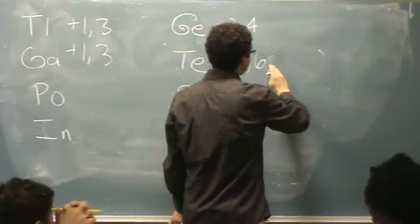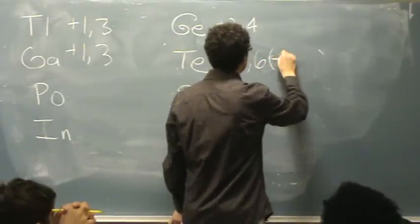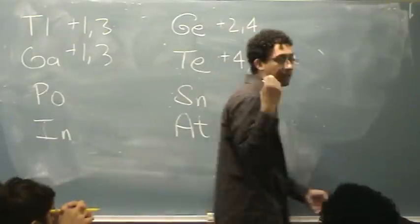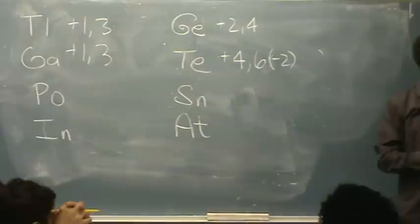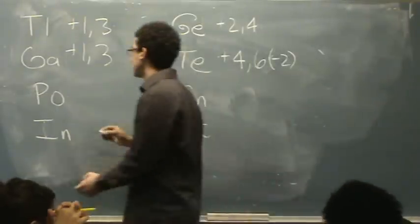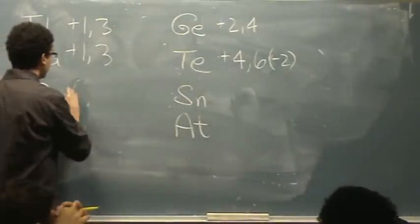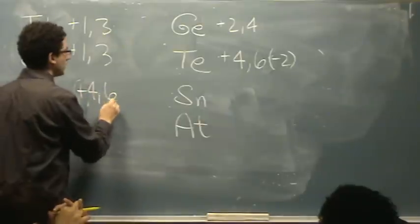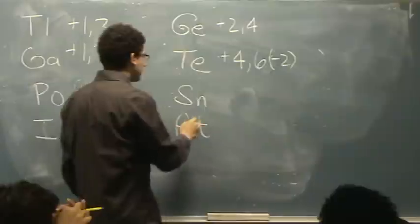but really the problem is specified for the inert pair effect, so I don't know if they care. It doesn't matter anyways, they're not going to be the same. Polonium is +4 and +6. It's in the fourth column.